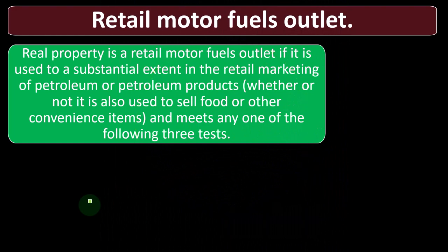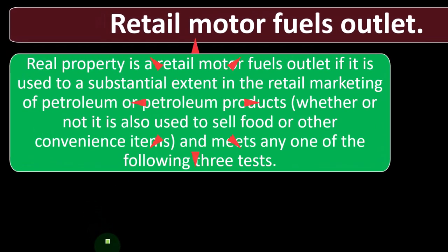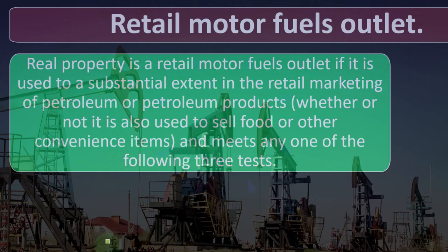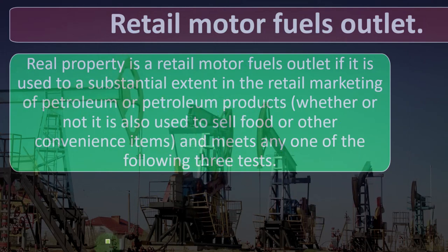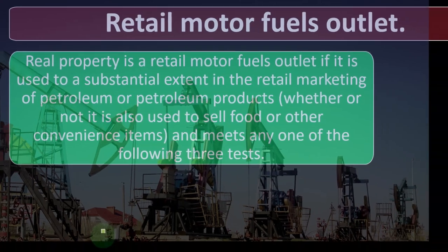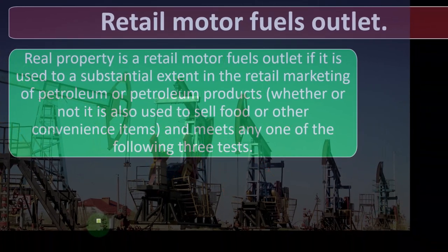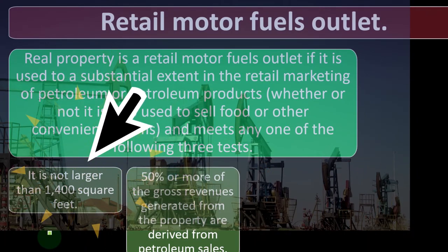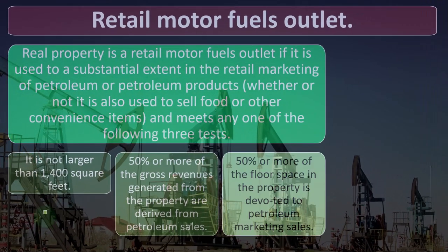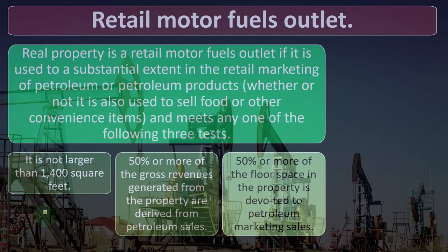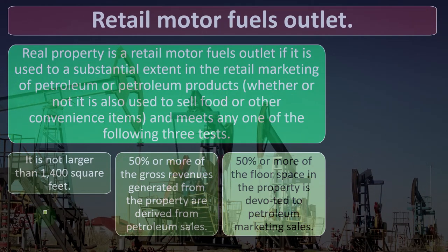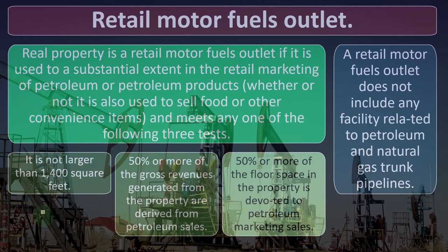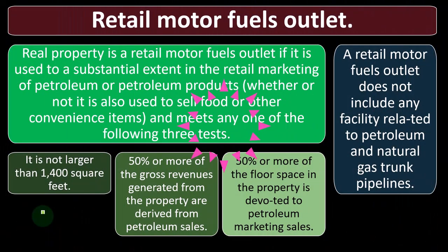A retail motor fuels outlet is real property used to a substantial extent in the retail marketing of petroleum or petroleum products. It meets any of the following three tests: it is not larger than 1,400 square feet; 50% or more of the gross revenue generated from the property is derived from petroleum sales; or 50% or more of the floor space is devoted to petroleum marketing sales. A retail motor fuels outlet does not include any facility related to petroleum and natural gas trunk pipelines.